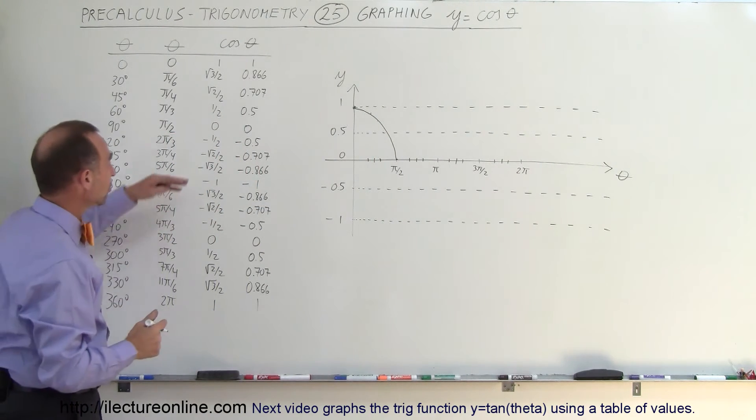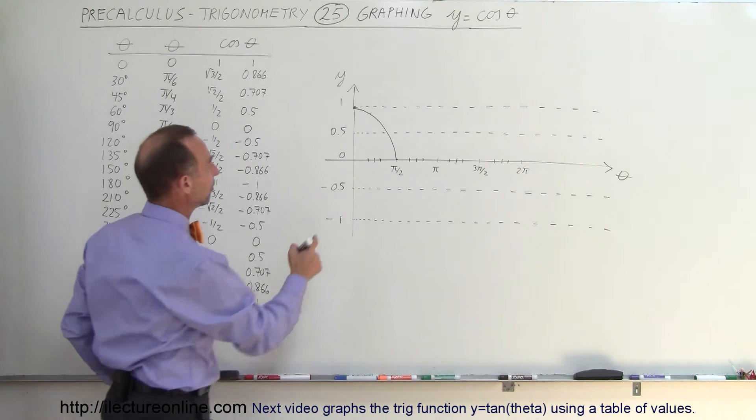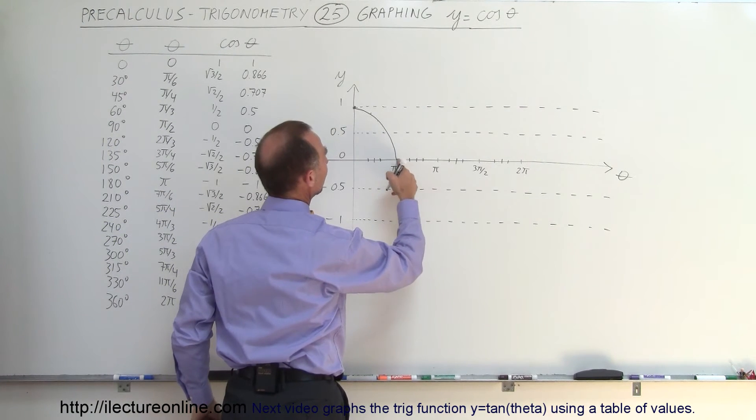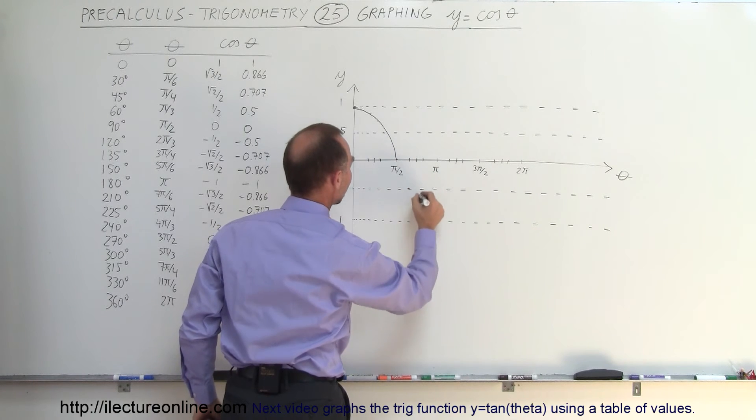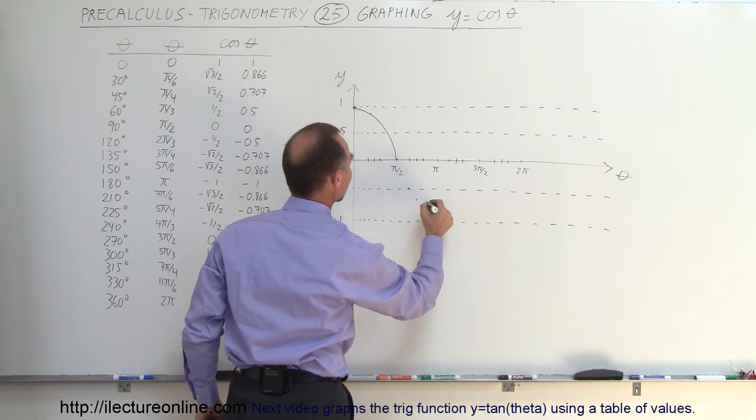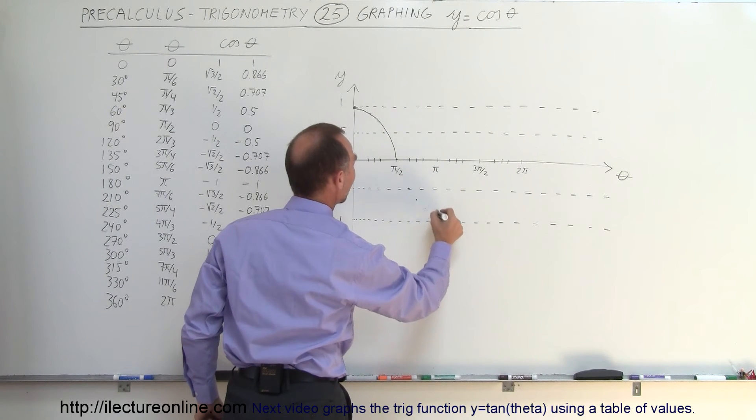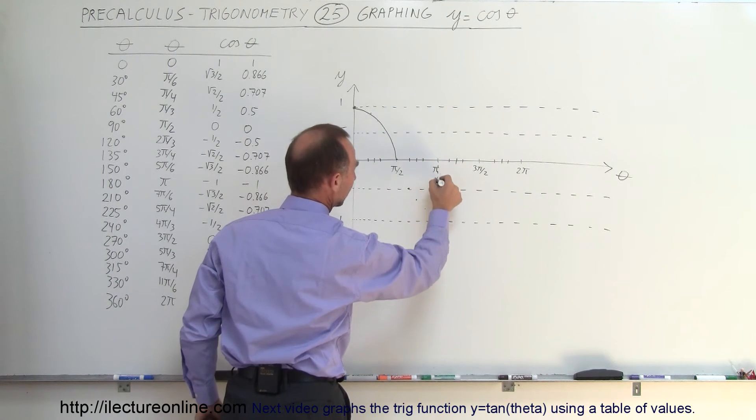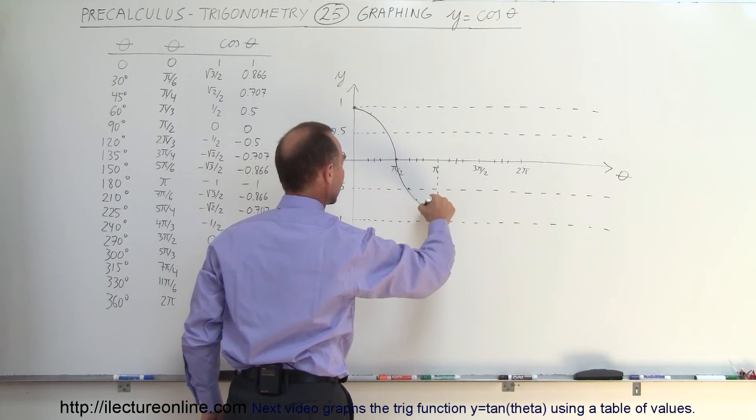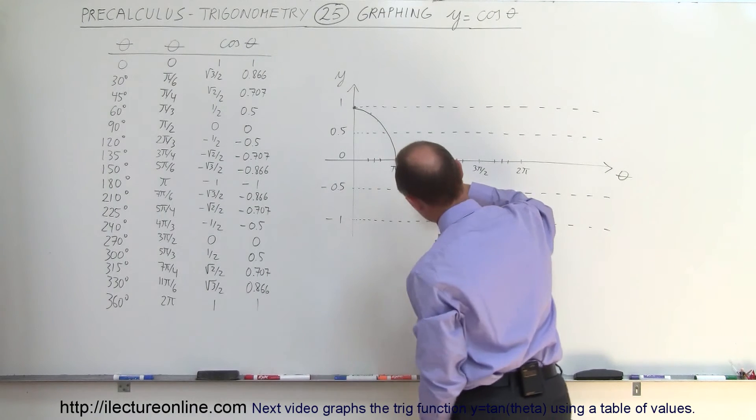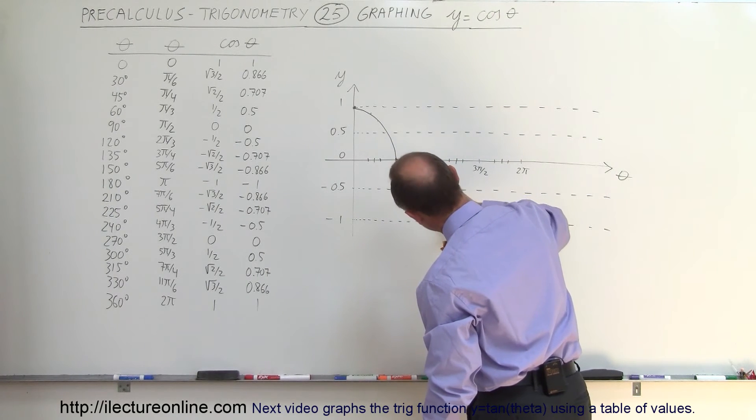Then if we continue, you see now the values become negative. At 30 degrees past pi over 2, or 120 degrees, it's negative 0.5. Then it becomes negative 0.707, then negative 0.866, and then negative 1 at theta equal to pi, which is right about there. The cosine of theta continues on like that, and it's sometimes a little hard to graph, but there we go.